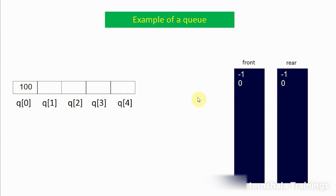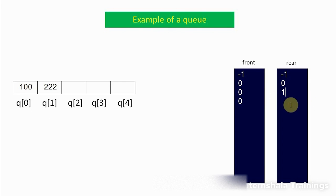Now I want to insert another element. Since elements are inserted only from the rear, the value of front will not change — it only changes when we remove an element. The value of rear is incremented by 1 from 0 to 1, and the new element — suppose 222 — is inserted at queue[1]. Again inserting another element: front remains 0, rear becomes 2. Then inserting one more: front stays 0, rear becomes 3, and the new element is inserted at queue[3].